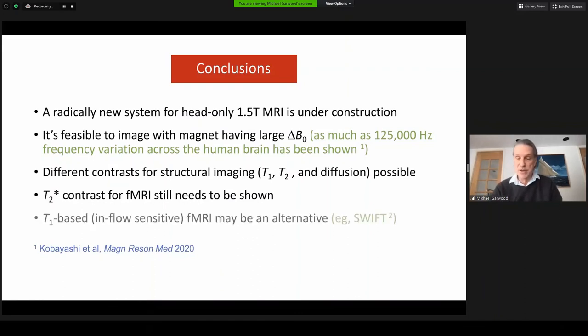And it may turn out that for functional imaging, we may need to use alternative contrast, such as T1-based inflow-sensitive sequences like SWIFT, which we have previously shown can be used for functional imaging.